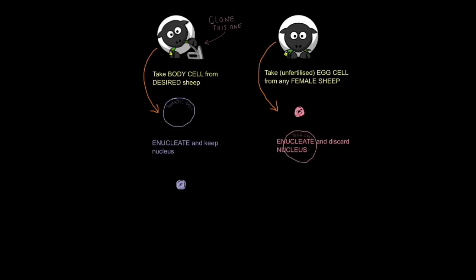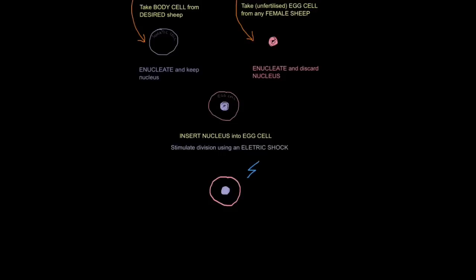We enucleate the other cell as well, but this time we discard the nucleus because we don't need that nucleus. It's only half complete anyway because it's an egg cell nucleus. But remember, an egg cell's job is to divide and create an entire whole organism. So now we insert the nucleus from the desired sheep into the egg cell. So now this egg cell contains a nucleus which is diploid, which contains all the genetic information needed to create that sheep again. Diploid means it has two sets of chromosomes as opposed to one set of chromosome which you find in gametes such as sperm and egg. Then we need to stimulate cell division and we do this by administering a small electric shock.